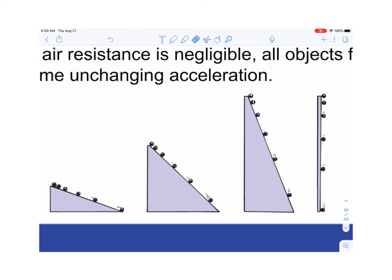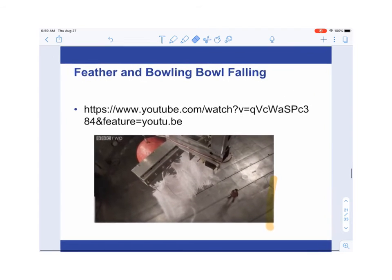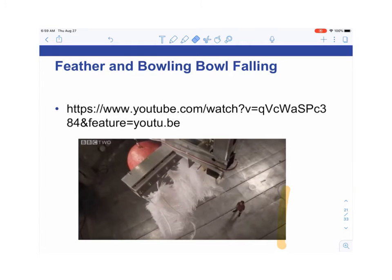Galileo ran experiments on falling objects. Before Galileo, people believed that a heavier object — say, twice as heavy — would fall twice as fast. Galileo went to the top of the Tower of Pisa, dropped objects, and discovered that's not the case. He then showed a video demonstration using a bowling ball and a feather dropped from high up.